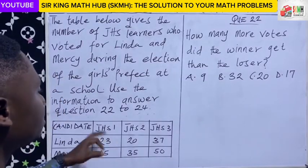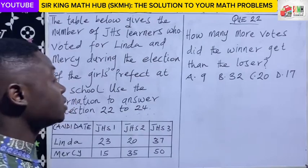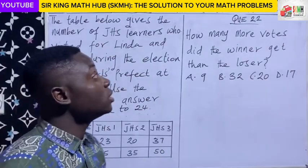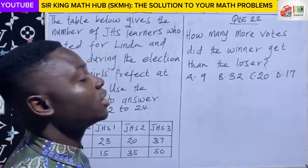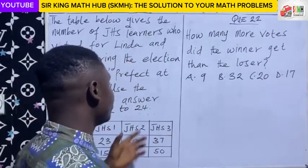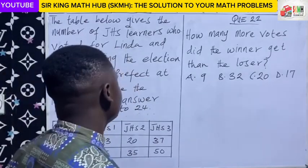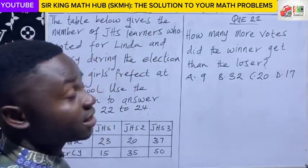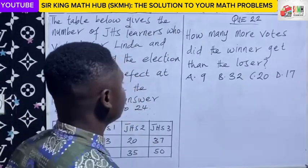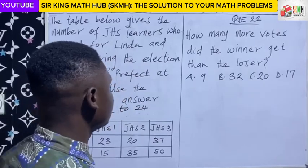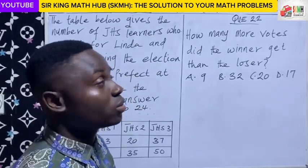Using this information, we have to answer questions 22 to 24. Let's start with question 22. The question asks: how many more votes did the winner get than the loser? So first of all, let's calculate the total votes of each candidate.